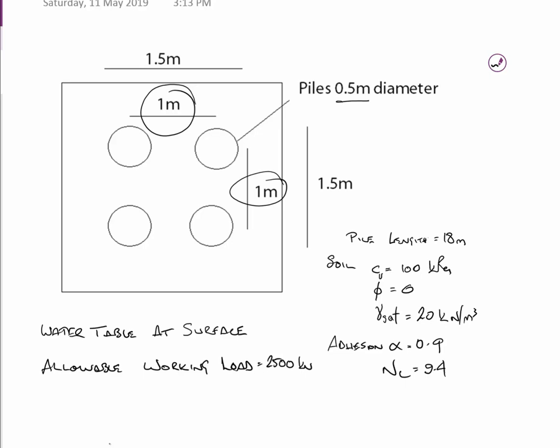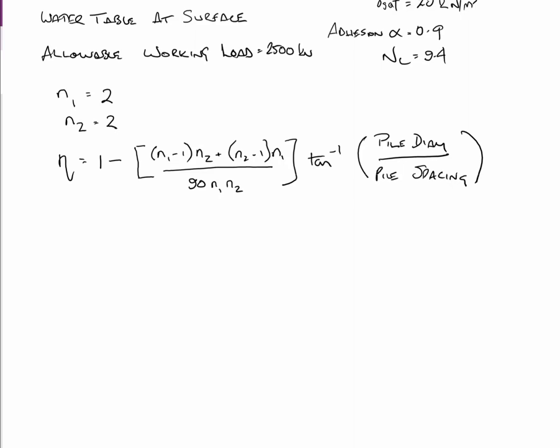So what we've got to do is calculate the most likely failure type. There's two types: group failure and block failure. And I'll explain them as we go through. And then calculate the factor of safety against failure. As we would have discussed in the lecture today, a group of piles, like in this case we have four piles, doesn't work as efficiently as four individual piles. There's a factor we multiply called NETA.